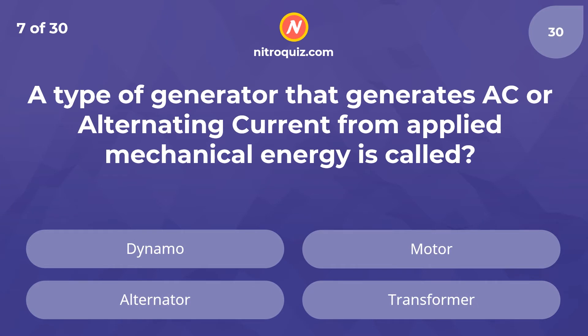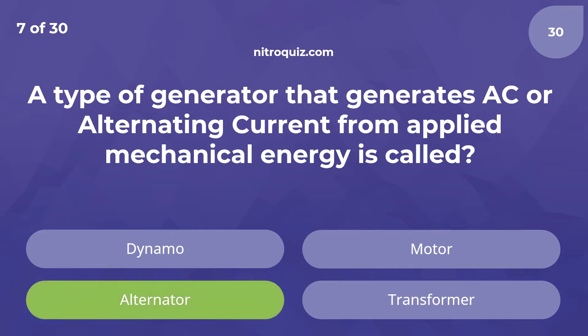A type of generator that generates AC or alternating current from applied mechanical energy is called? Answer is Alternator.